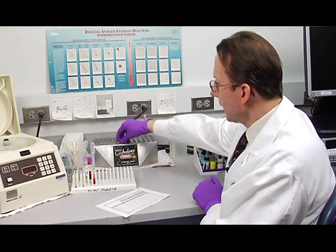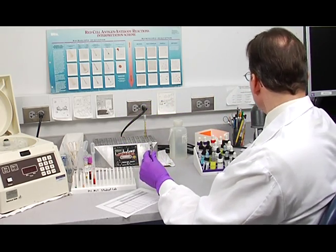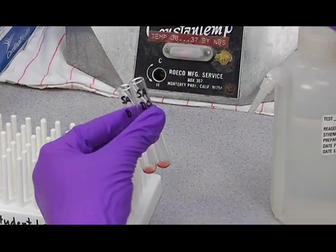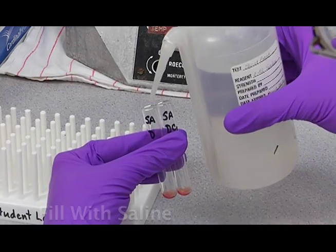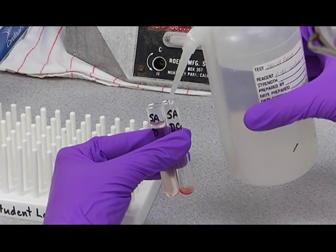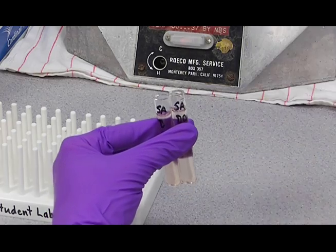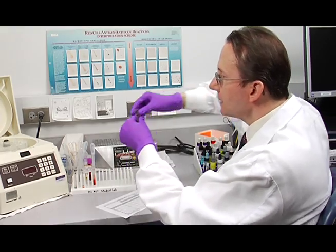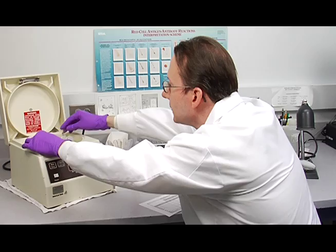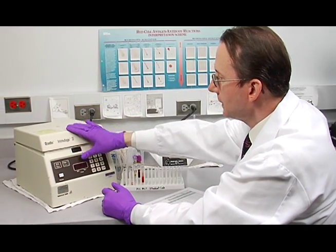After the 15 minute incubation period, take your tubes out of the heat block and fill the tubes with saline. Then place them in the centrifuge. Make sure you balance them across from each other. You also need to make sure that the liquid level in both tubes is very close so that they balance.